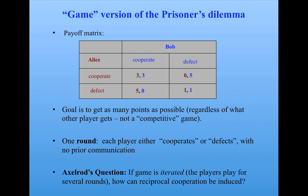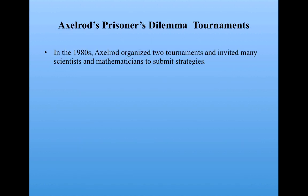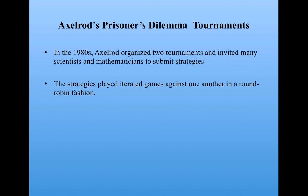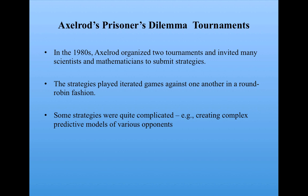Axelrod's question was: suppose the game is iterated — that is, the players play for several rounds, remembering what the other player did on previous rounds. How is it possible that reciprocal cooperation can be induced? To study this, Axelrod devised two tournaments in which he invited well-known political scientists, other social scientists, mathematicians, and game theorists to submit strategies to play against one another. The strategies played iterated games in a round-robin fashion, with each strategy playing against every other. Some people submitted very complicated strategies with complex statistical models; all strategies were given as computer programs.